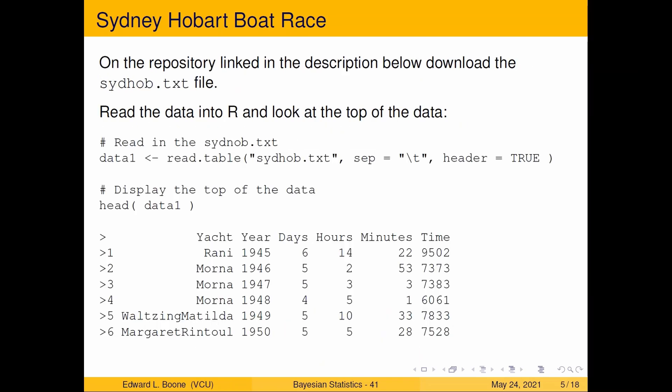So if you go to the repository linked in the description below, you can get this data at sydhob.txt. And we're going to read in the data and look at it. So I read it in here as data one, read table. And this is just reading it and it's a table. So it has tab separated. So that's why you see this here. And that's why we're not using read.csv.